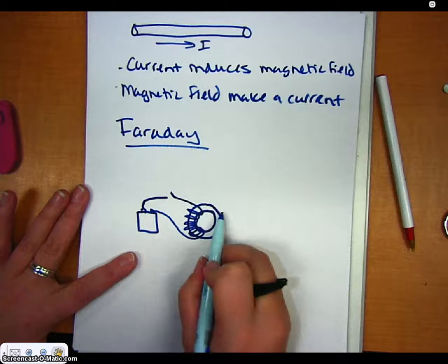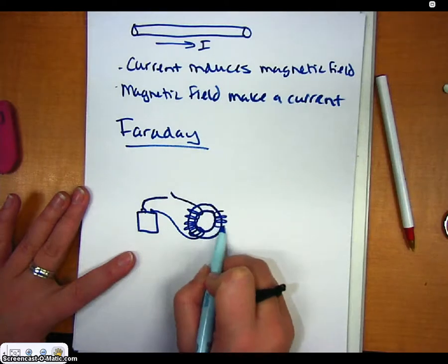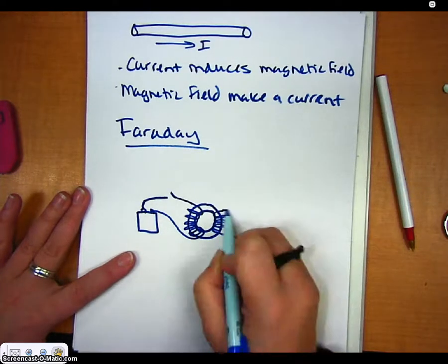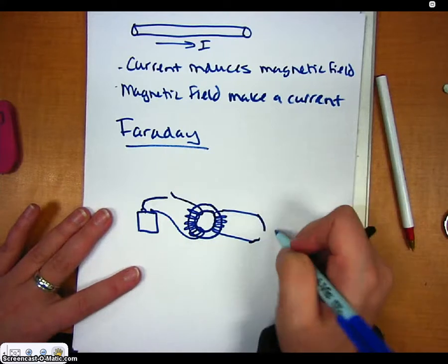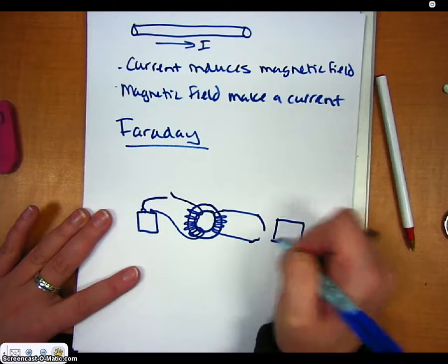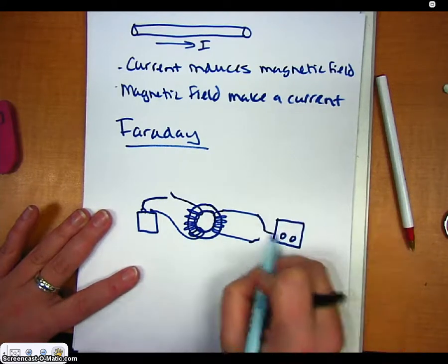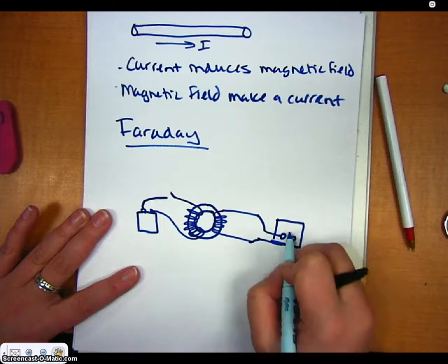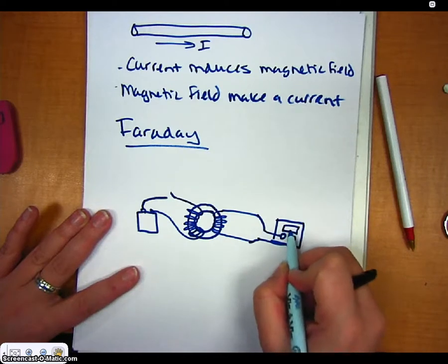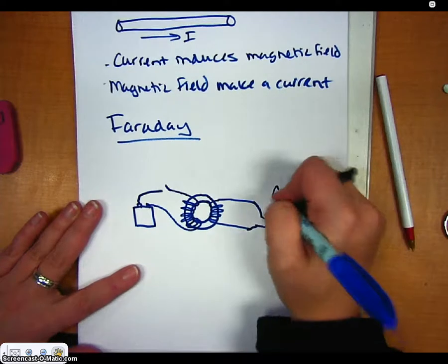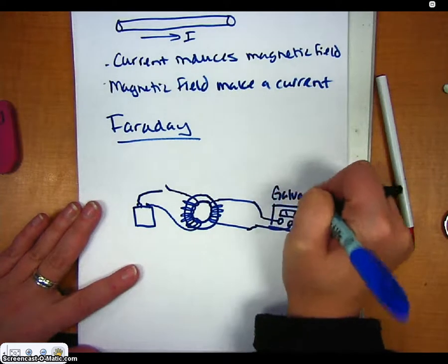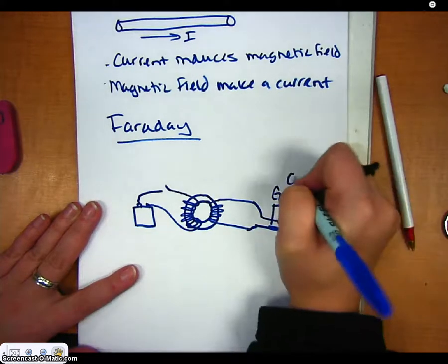And then on the other side, we've got another wire coiled, and this is attached to a galvanometer, which is another instrument that measures current. And so it's got a little thing that will go back and forth based on current.